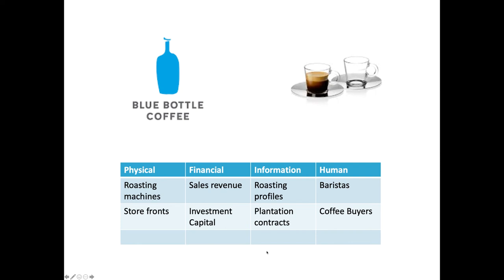Let's look at one more organization: Blue Bottle Coffee. For my money, Blue Bottle may serve up the best cup of coffee in the Bay Area — they care about their roast in ways others do not. If you're truly a coffee lover who drinks it black or as a double espresso with no sugar, you're going to Blue Bottle. But back to the slide — Blue Bottle Coffee has physical resources like roasting machines and physical storefronts.